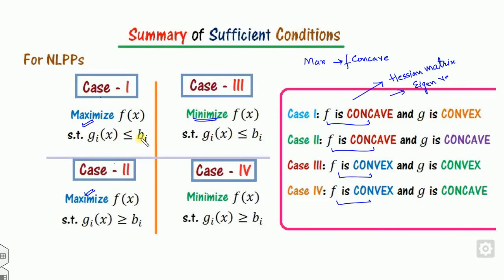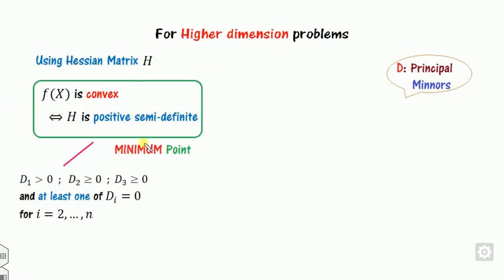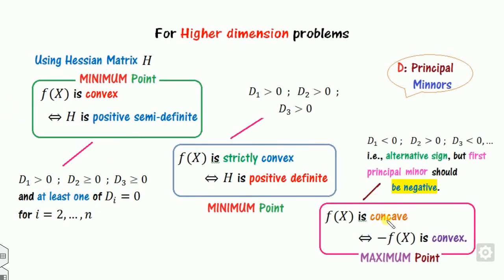If the constraints are of less-than sign, you must prove the constraints are convex functions. If the constraints are of greater-than sign, you must prove they are concave. To prove convexity or concavity, compute the Hessian matrix and find the principal minors. If all principal minors are greater than zero, the function is convex. If they are of alternating sign with the first principal minor negative, the function is concave.